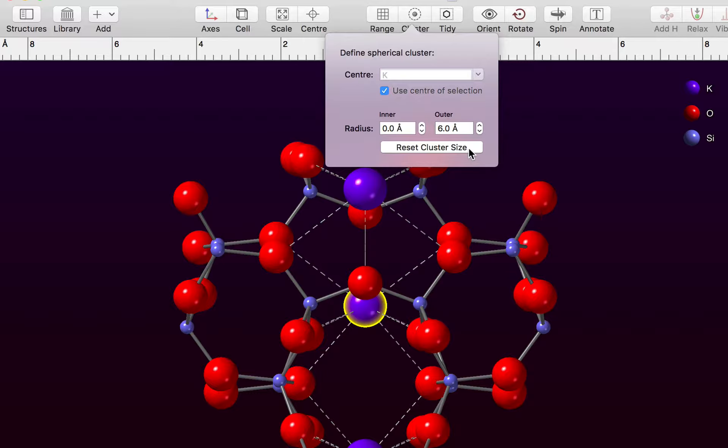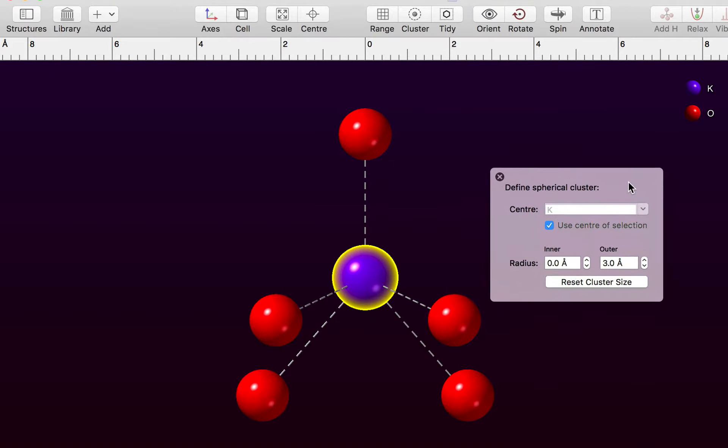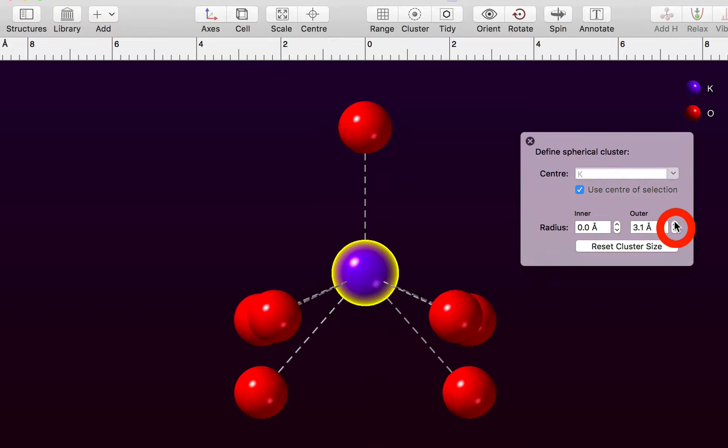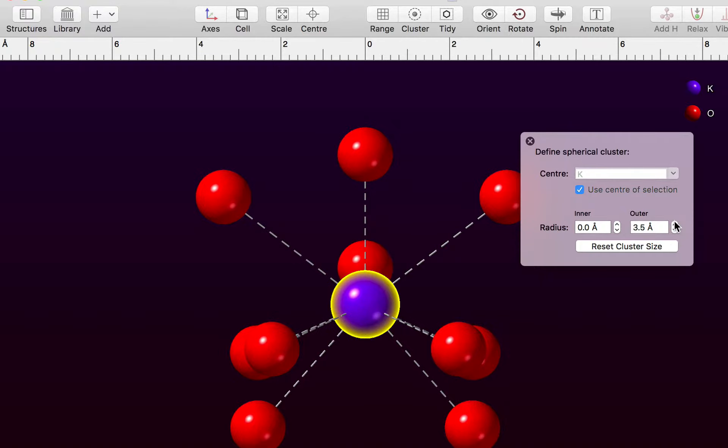Now we can press the reset size button to show a three angstrom cluster. I can actually drag this box away so we can see a bit more about what's happening, and we can expand the size of our cluster by using the up down buttons here.